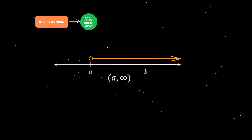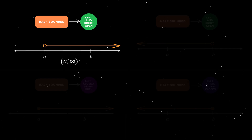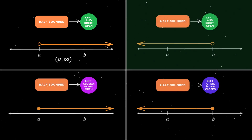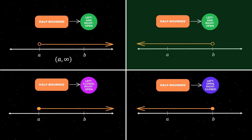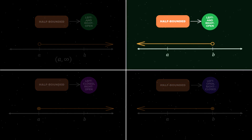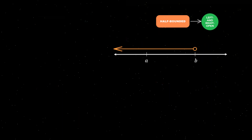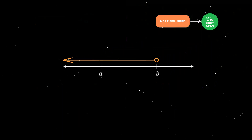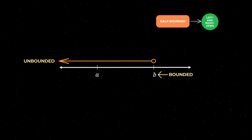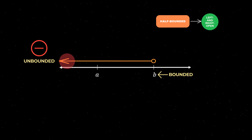Let's now look at an alternative version of this type of interval shown on this number line. This interval is half bounded because it has one endpoint on one side — in this case the right endpoint B — and no endpoint on the other side, as indicated by the arrow. On the left, the interval is open because the real numbers go on forever, in this case in the negative direction of the number line.